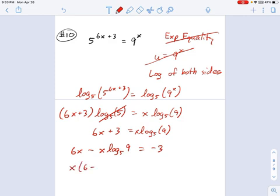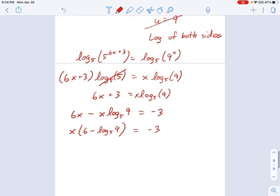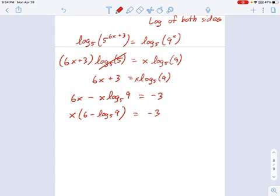And now I factor out an x as the greatest common factor. So that's x times 6 minus log base 5 of 9 equals negative 3. And hopefully you can see what we do now. There's just one thing in the way. I need to get rid of this 6 minus log base 5 of 9. So we divide each side by 6 minus log base 5 of 9.